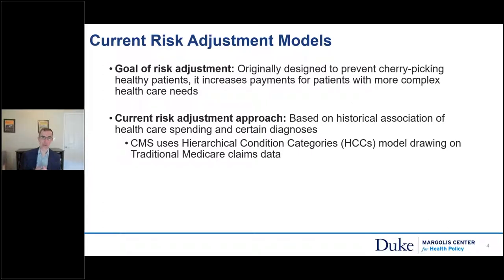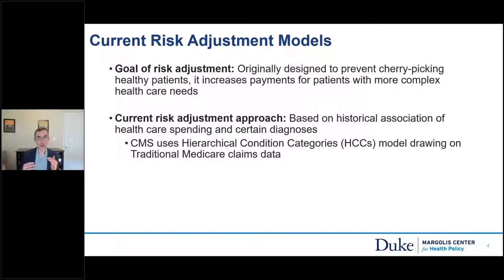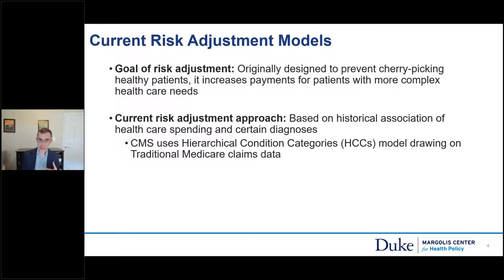From first principles, risk adjustment was originally designed to avoid adverse selection or cherry-picking — where providers given a set budget per person are incentivized to find patients whose expenditures will be less than that budget. The basic approach has been to look at historical associations between healthcare spending and specific clinical diagnoses. CMS uses the HCC system, which draws on traditional Medicare claims to make those associations.